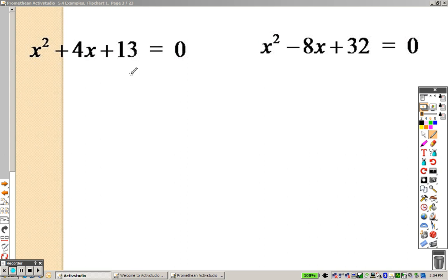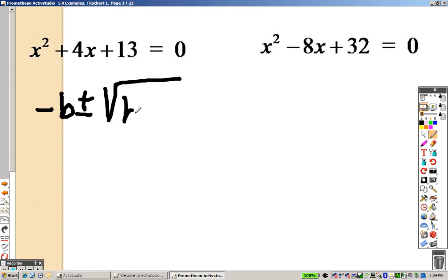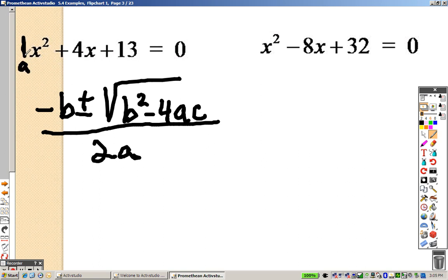The quadratic formula is negative b plus or minus the square root of b squared minus 4ac divided by 2a. And a happens to be 1, b is 4, c is 13. So I plug it all in.